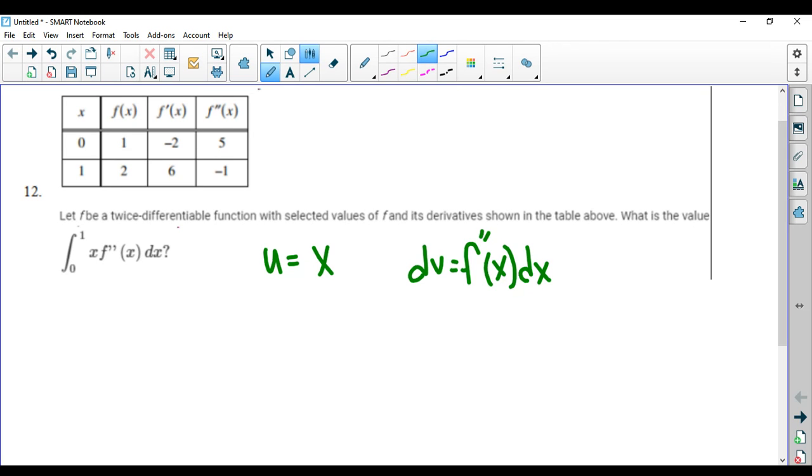So du is dx. For the dv, we integrate to get v. And if you integrate f double prime, it finds the anti-derivative, which should just be f prime.